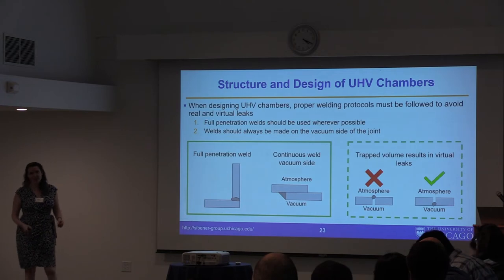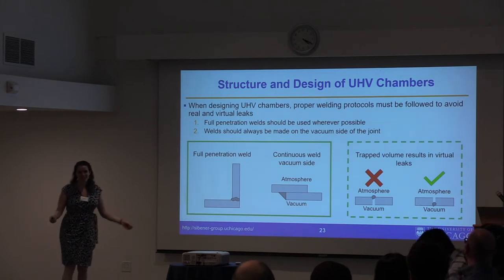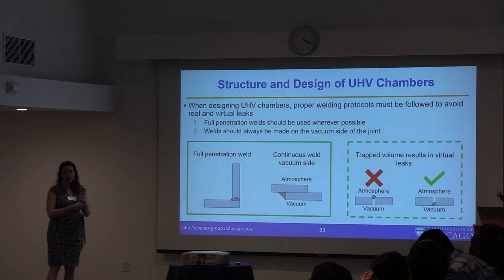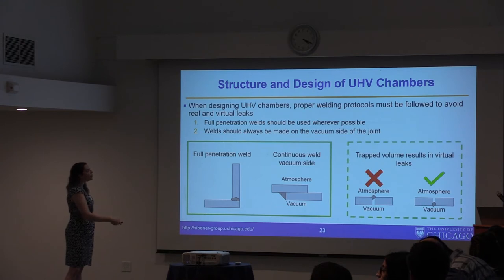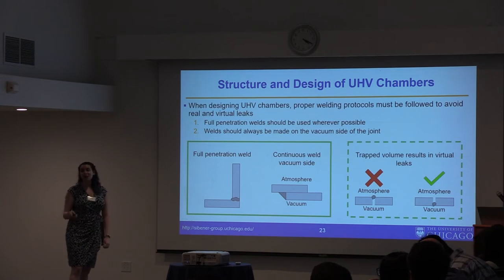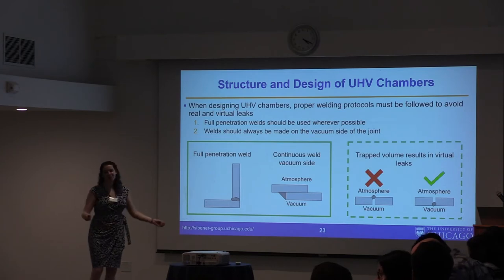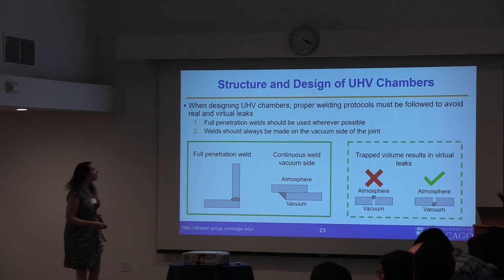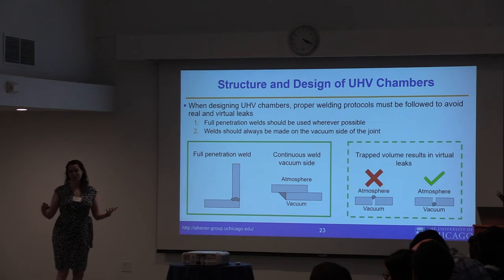When it comes to welds, UHV is constrained. There are two good weld types: a through weld or full penetration weld going through the entire junction, or a vacuum-side weld where you weld on the interior vacuum-facing side with no weld on the atmospheric side — giving full contact with no trapped gas. If you weld incorrectly — say an external weld on the atmosphere-facing side — you trap a volume of gas in your chamber, creating a virtual leak. You can bake and pump for years and never reach UHV. A partial weld on both sides also creates a virtual leak.